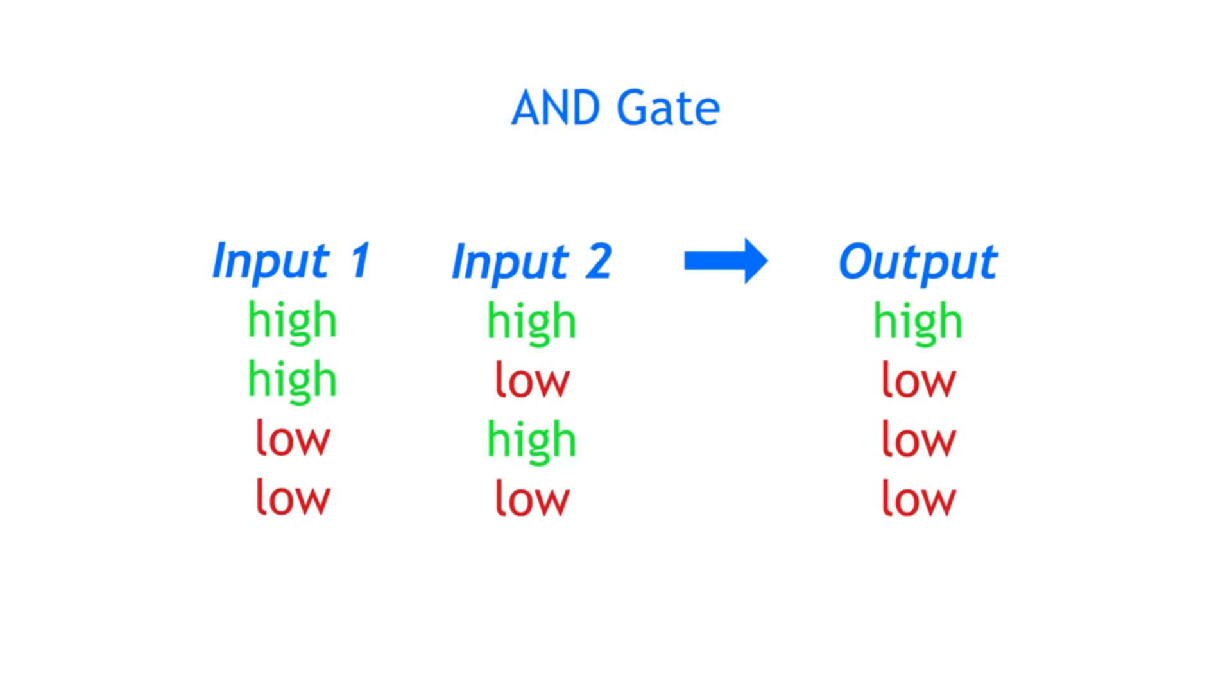An AND gate will output a high signal when all of its inputs are high. If only one input is high, it will output a low signal.